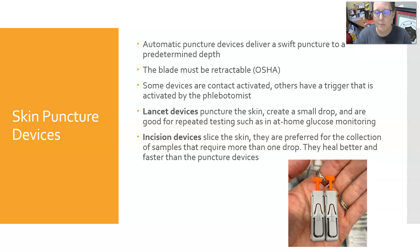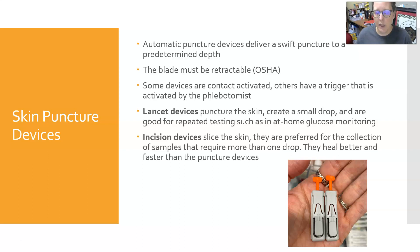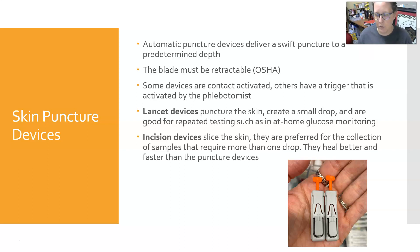Some devices are contact-activated, meaning they activate when pressed against the skin, while others have a trigger the phlebotomist must press to activate. Lancet devices puncture the skin creating a small hole, tend to produce smaller drops, and are good for repeated testing such as at-home glucose monitoring. Incision devices slice the skin, are preferred when more than one drop is needed, and heal better and faster than punctures.